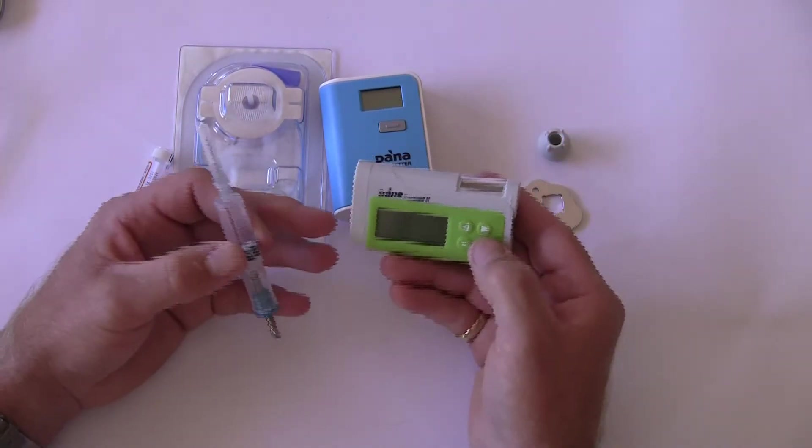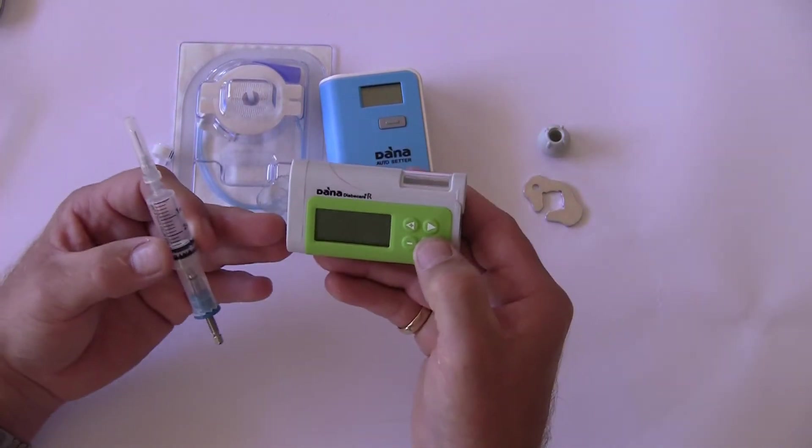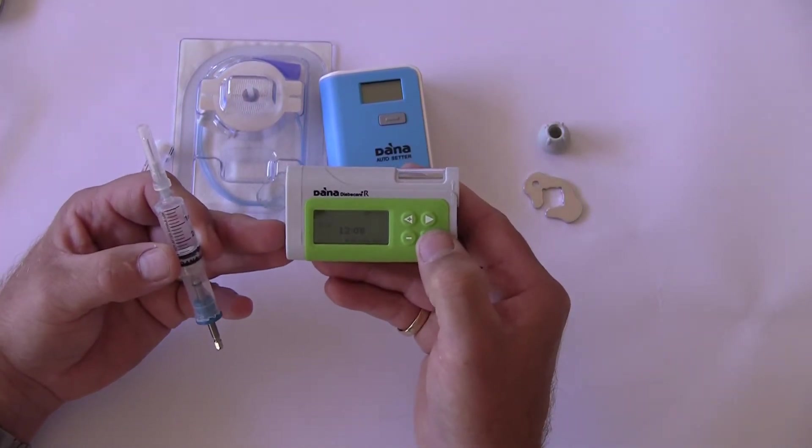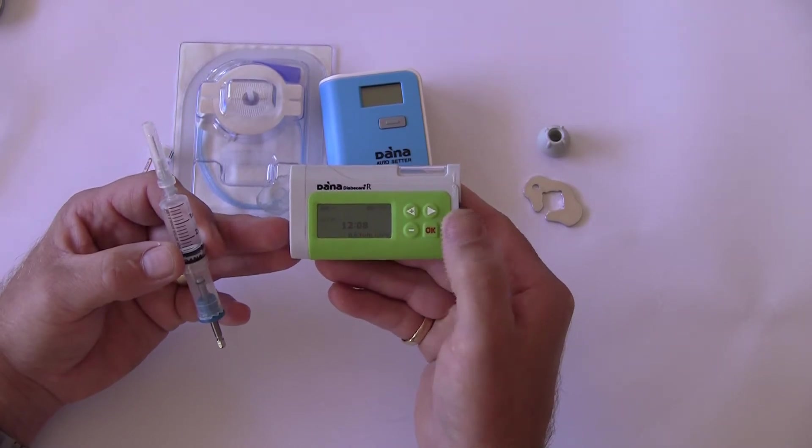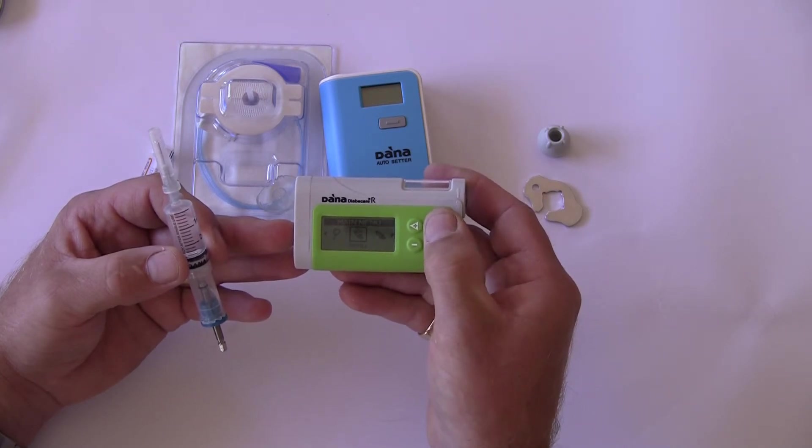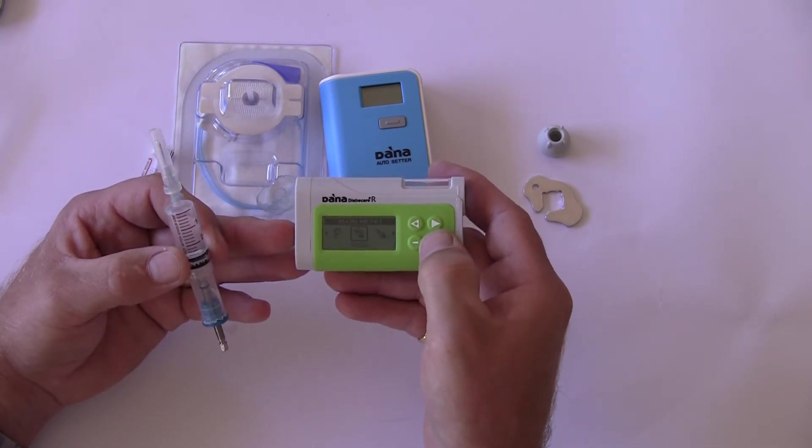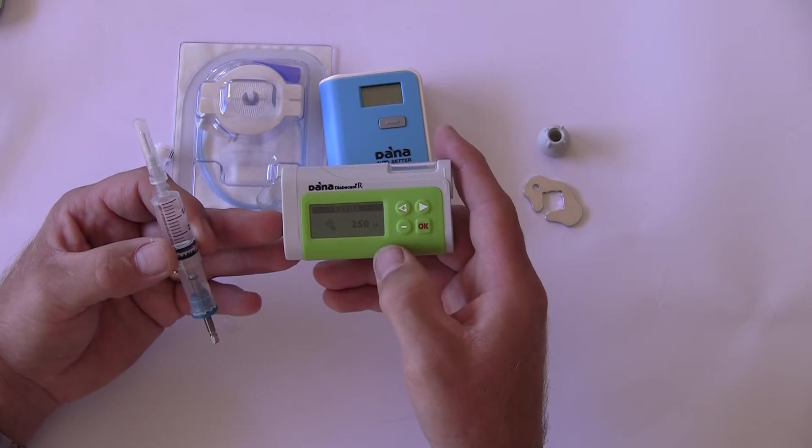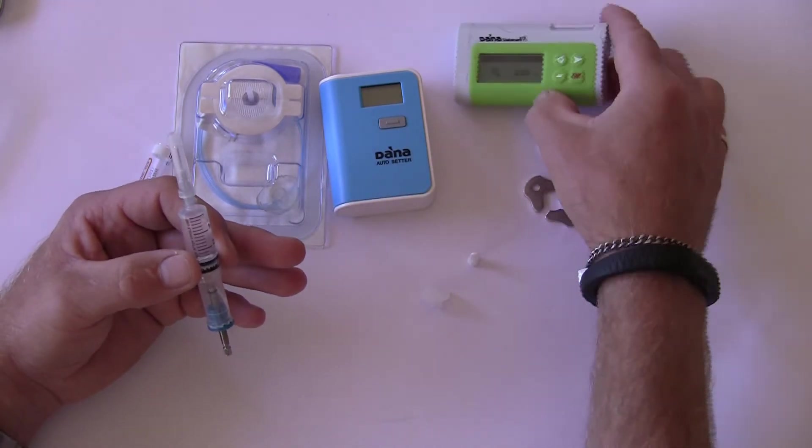Right, now take the Dana insulin pump and in here we can wake it up with one button press. Now trust or hope that we can see the menu there. We can scroll through to the menu process to the right until you see the little refill. Select OK and the pump displays 250 units. We now leave the pump sitting down there.